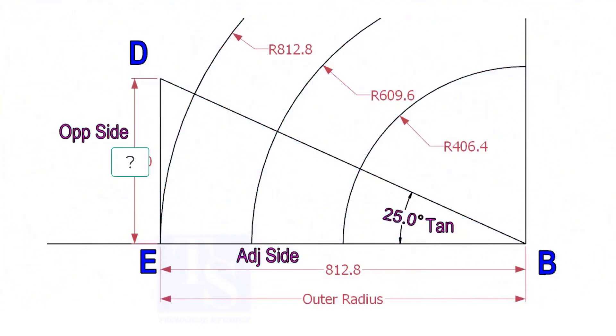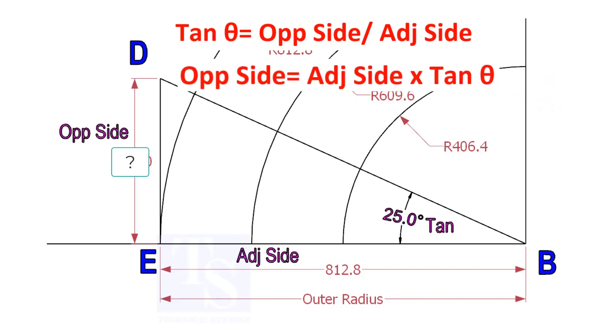Mark a line 25-degree rotated from the base line AB. To draw the line DB, we need to know the length of the line ED. To calculate ED, we need to apply the formula: tan theta equals opposite side divided by adjacent side. Opposite side equals adjacent side multiplied by tan theta.